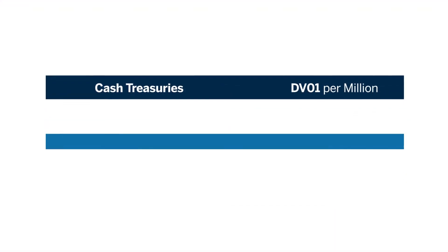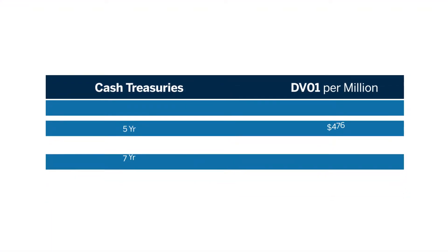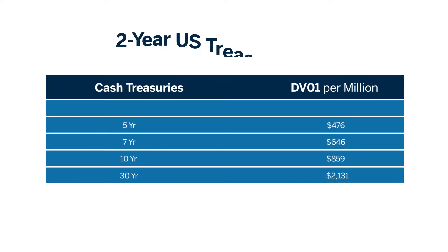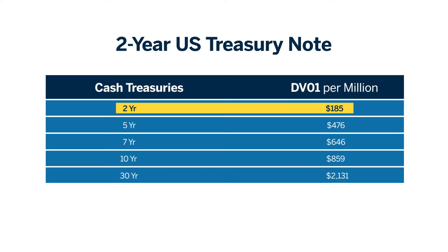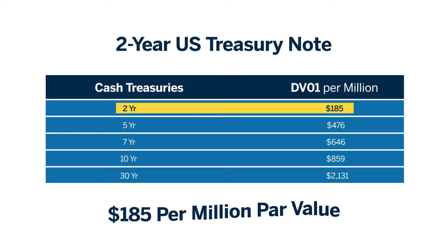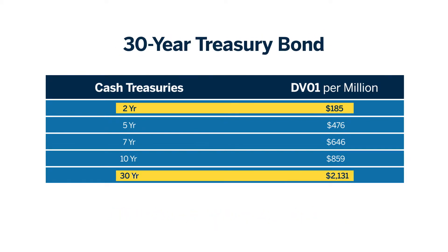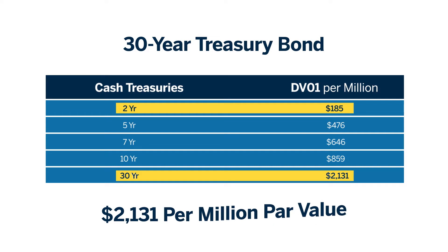DV01s tend to get larger as you move out the yield curve. For example, a two-year US Treasury note may have a DV01 of $185 per million par value, while a 30-year Treasury bond may have a DV01 of $2,131 per million par value.